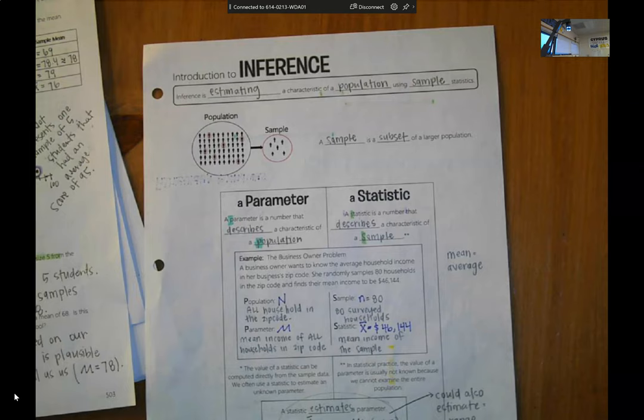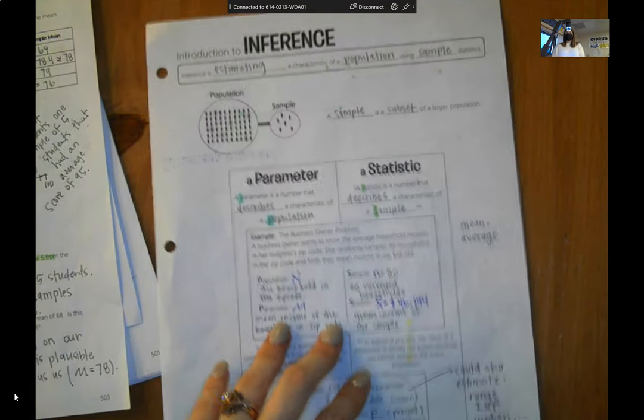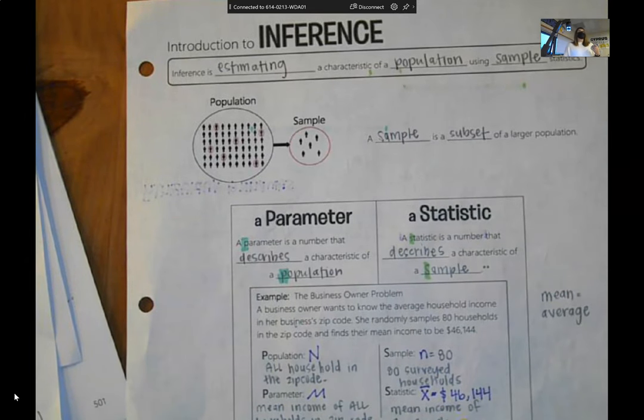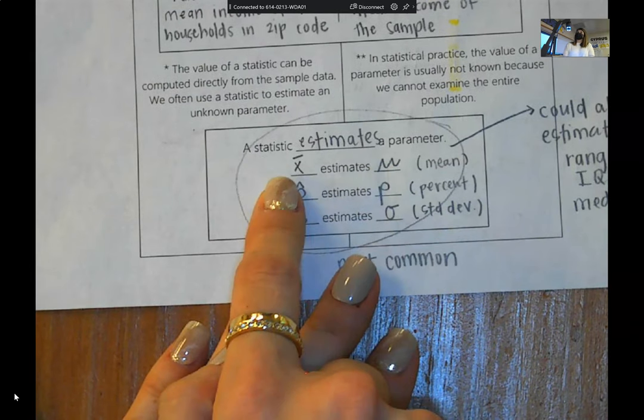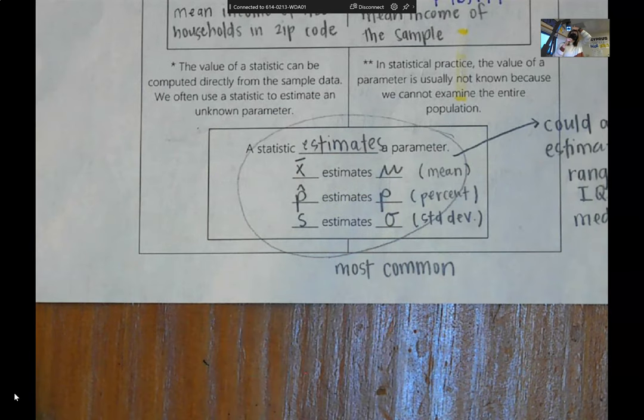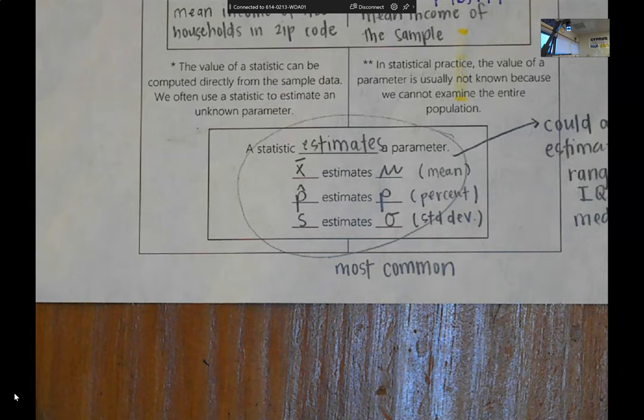Where we started last time was we want to start making estimates for a population value by taking a sample. The reason that we want to take a sample is because sometimes it's just not feasible or reasonable to look at the entire population. If you are looking at an average, your parameter is mu and your sample statistic is x bar.